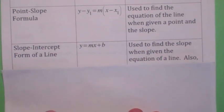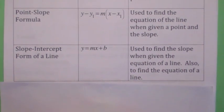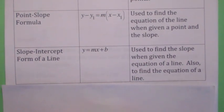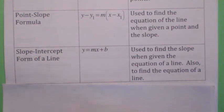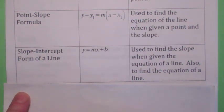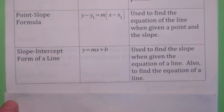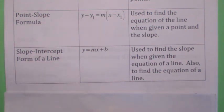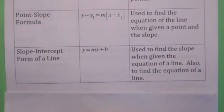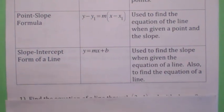The slope-intercept form is used for several things, but certainly if you know the equation and you want to find the slope, the fastest way is to solve for y — it'll be the coefficient of x. So the key question is: what information do you need to find the equation of a line? Typically, the answer is you need a point and you need the slope.